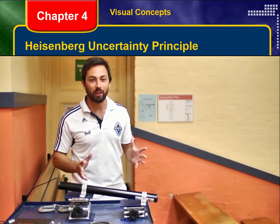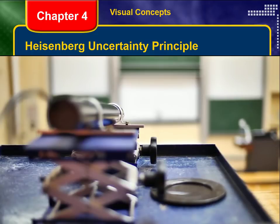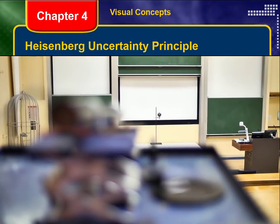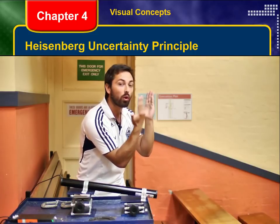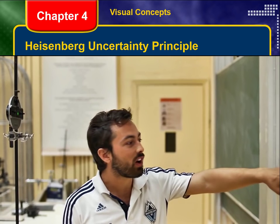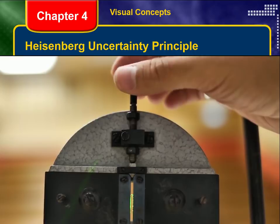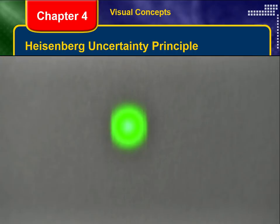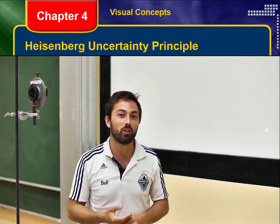Today I'm doing an experiment that demonstrates Heisenberg's uncertainty principle. I have a green laser, and I'm firing it down towards the front of the room through a narrow slit. That slit can be adjusted — it can be made narrower or wider — and the laser spot is projected onto a screen behind it. As I narrow the slit, you see exactly what you'd expect: the spot gets narrower and narrower, the sides are getting cut off by the slit. It makes complete sense, and if you stop there, you would never realize that Heisenberg's uncertainty principle is at work.